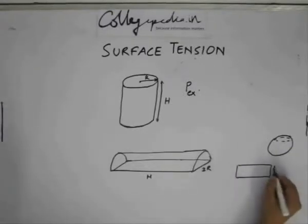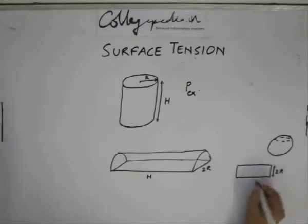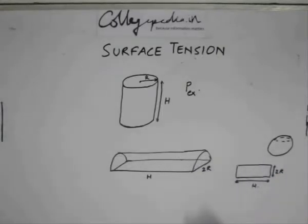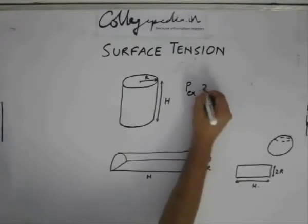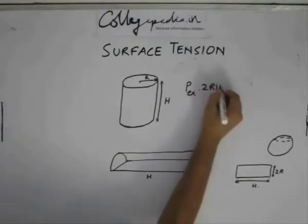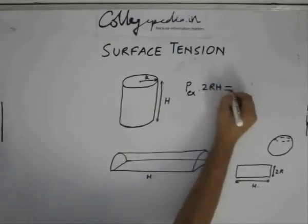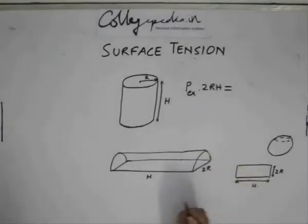This has an area of 2r into h. So the pressure force that we need to consider is Pxs into 2r into h. This needs to be balanced off by the surface tension force.